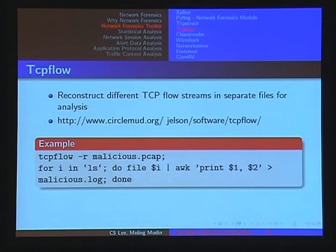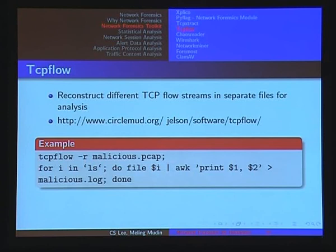TCP Flow is a tool whose goal is to reconstruct different TCP flow streams into separate files for analysis. Most traffic will consist of different sessions — HTTP, Amazon, BitTorrent, chat, etc. TCP Flow reconstructs those different TCP flows into separate files for analysis.